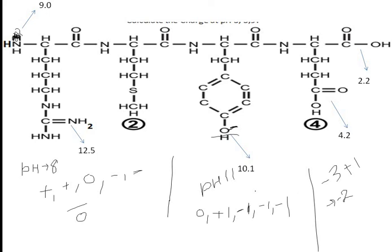So at pH 11, the charge of this peptide is −2. I hope you have understood how to calculate the charge. In my next video I will discuss how to calculate the isoelectric point and at which pH the protein moves towards the anode or cathode. Please don't forget to like and subscribe. Thank you.